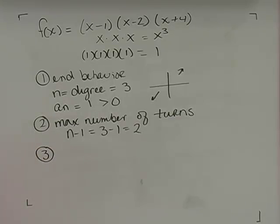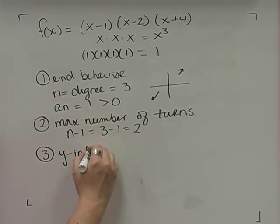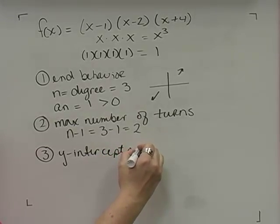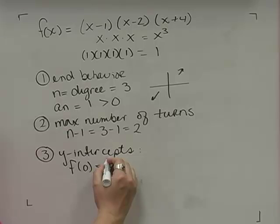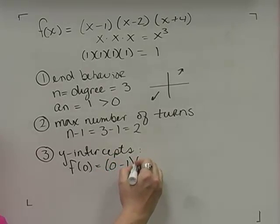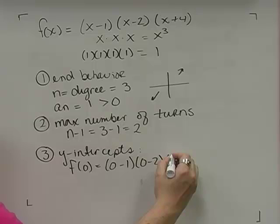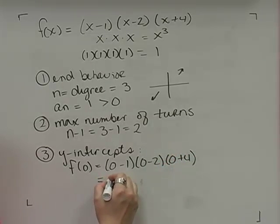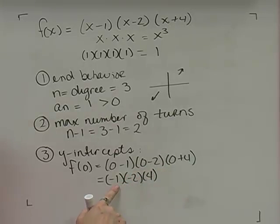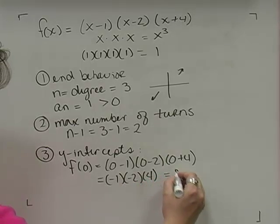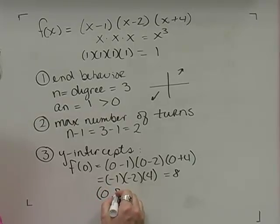After finding end behavior and max turns, I find the y-intercept by plugging in x = 0. f(0) = (0 − 1)(0 − 2)(0 + 4) = (−1)(−2)(4). Negative 1 times negative 2 is positive 2, times 4 is 8. So my y-intercept is at (0, 8).